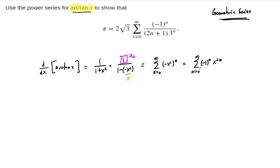We've seen this series before, but what we want to do now is undo this derivative to get the power series for arctangent. That is done by integrating — we can integrate away our derivative by the fundamental theorem of calculus, and on this side we integrate the terms of the power series.